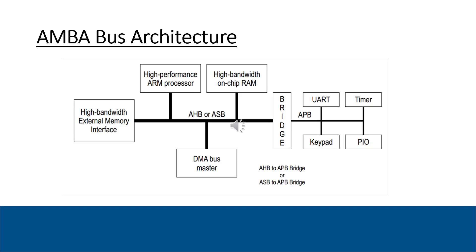As you can clearly see in this diagram, this is the basic architecture of AMBA. It consists of an AHB used for high performance tasks and an APB used for low speed peripherals. These two buses are connected through a bridge — the AHB to APB bridge — which allows communication between high speed and low speed components. This simple and modular design makes AMBA efficient and scalable for SoC integration.